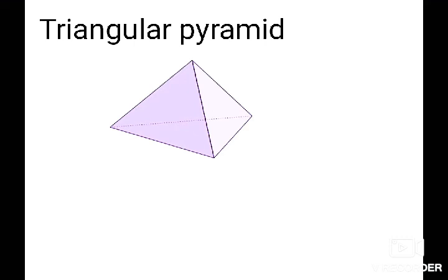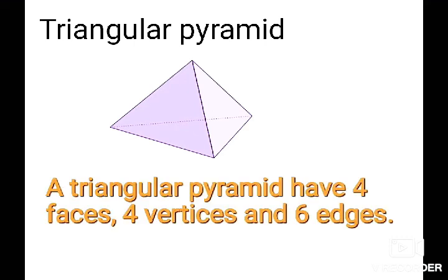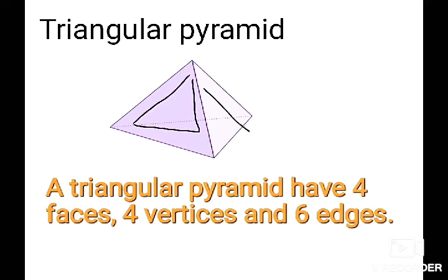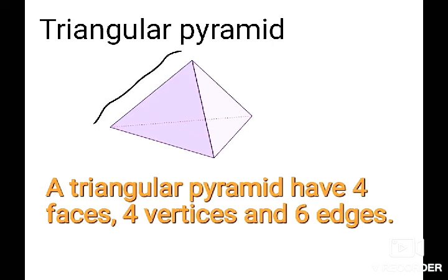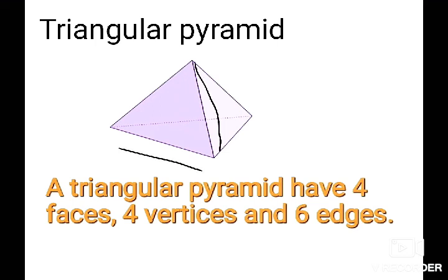Next is a triangular pyramid. A triangular pyramid has 4 faces, 4 vertices, and 6 edges. Counting the faces: the back side is a triangular face, plus 3 other triangular sides — giving 4 faces total. Counting the edges gives 6 sides. So a triangular pyramid has 6 edges.